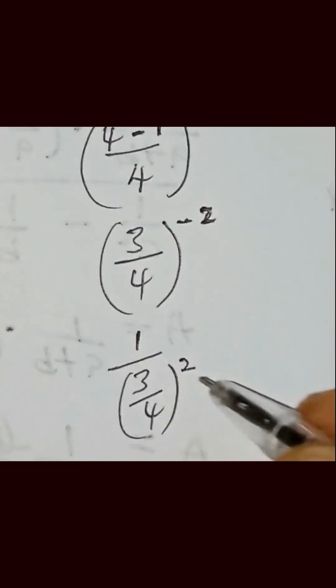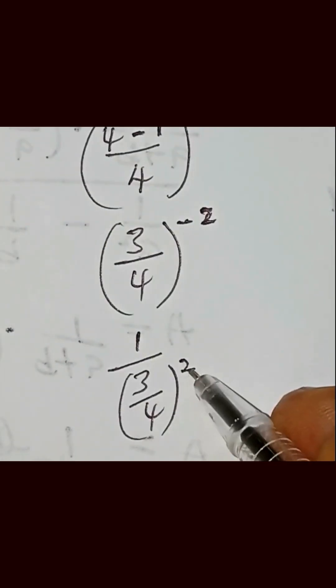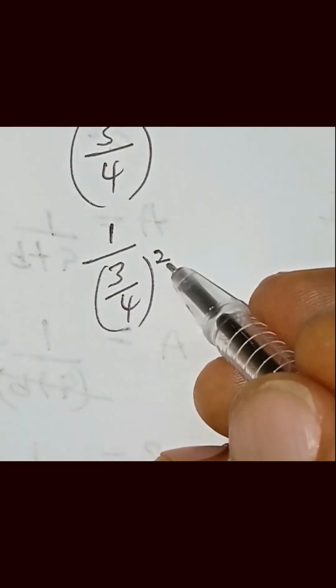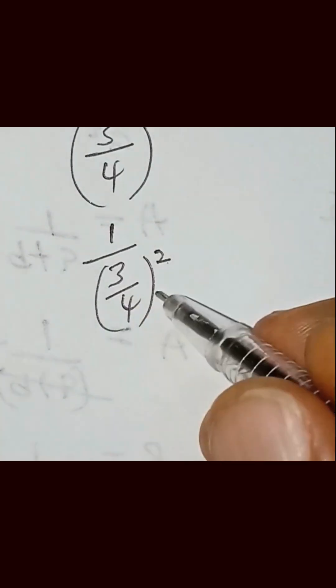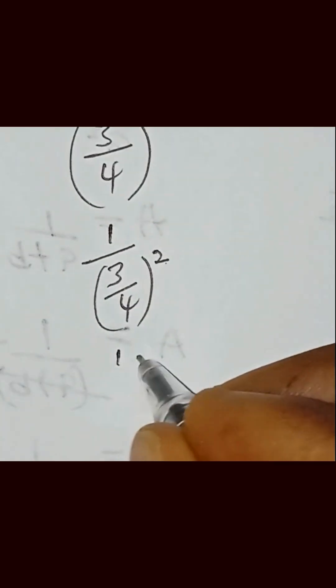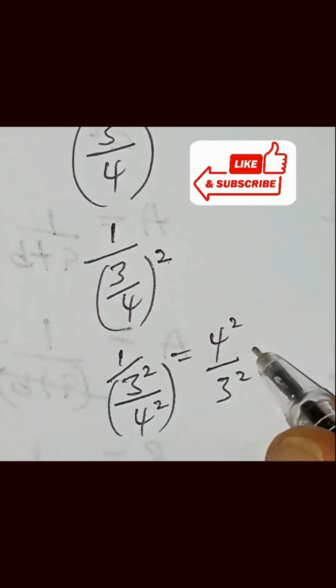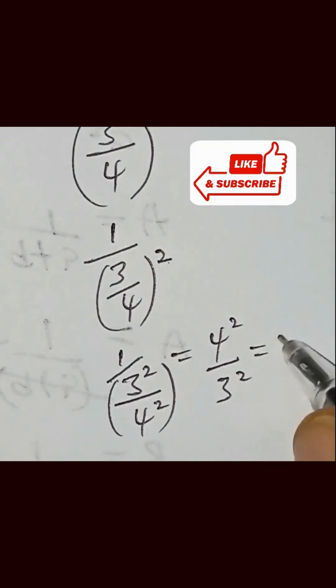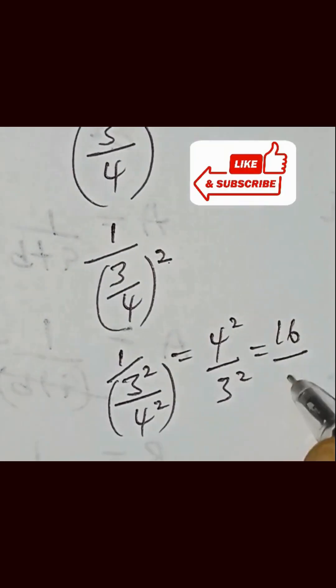Now let's apply the power. We have a fraction in the bracket: 1 over 3 raised to power 2, then 4 raised to power 2. The inverse of this gives us 4 raised to power 2 over 3 raised to power 2, which is simply 16 over 9.